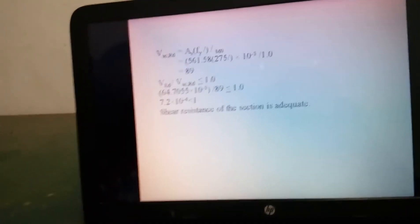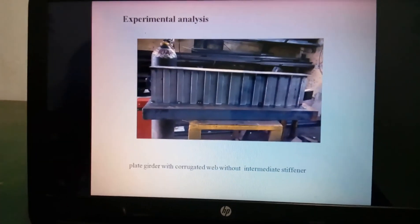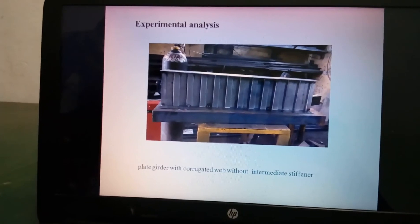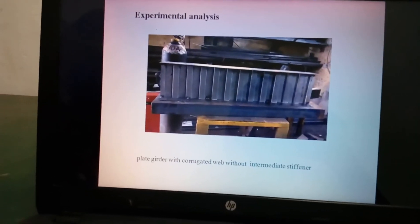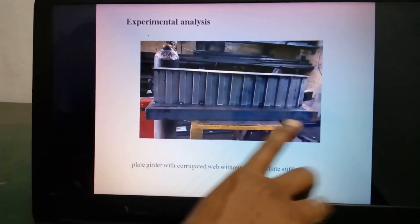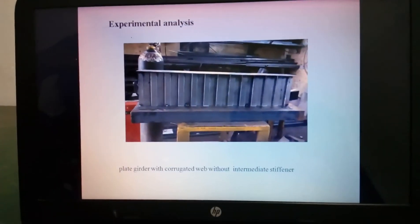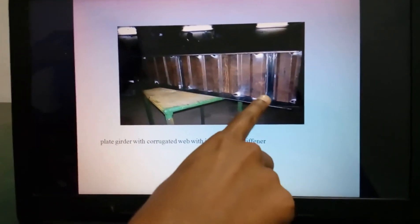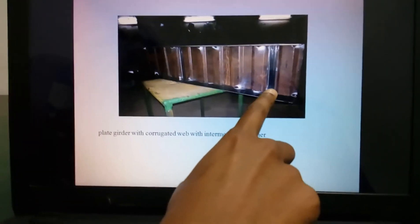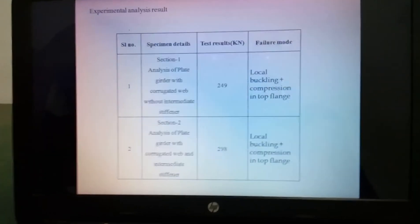Shear resistance of the section is adequate from the following calculation. This is the experimental analysis. This section I consider without intermediate stiffener, hence we see the section without any intermediate stiffener. In this section we include that intermediate stiffener.